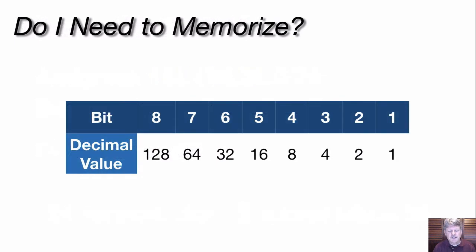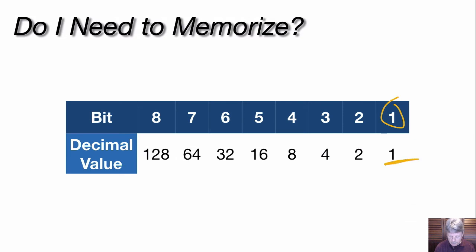Normally I suggest not memorizing anything you don't have to — if you can't remember it during work or an exam, you get into trouble. But if you're going to remember anything, try to remember the actual decimal values of the first eight bits: from bit 1 with a value of 1, up to bit 8 with a value of 128. If you know those, it'll allow you to add things up pretty quickly when you're working things out in your head.